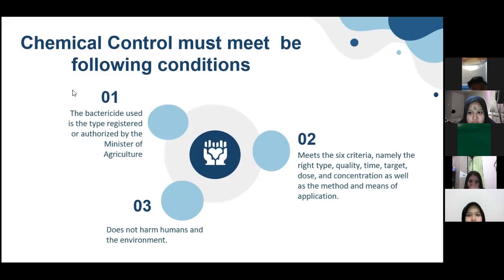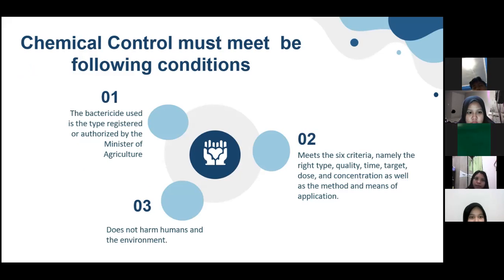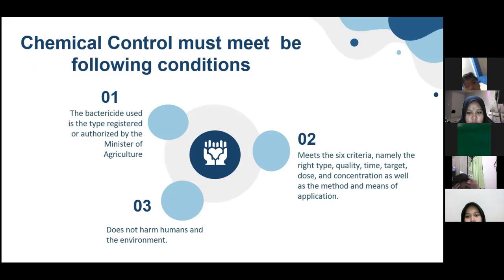Chemical control must meet the following conditions: number one, the bactericide used must be the type registered or authorized by the Minister of Agriculture; number two, it must meet six criteria, namely the right type, quality, time, target, dose, and consultation, as well as the method and means of application; and number three, it must not harm humans and the environment.